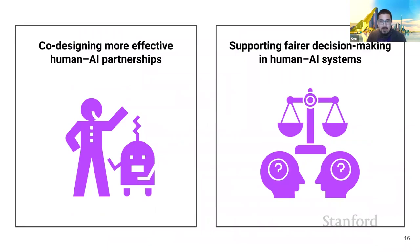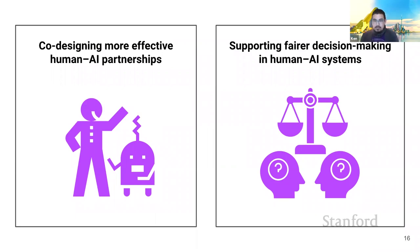In this talk, I'll share two major themes of my research. First, I've explored how to co-design more effective human-AI partnerships. And second, we've explored how to support fair decision-making within such partnerships. Today I'll share just one prior project under each of these broad themes, and I'm also excited to close this talk by sharing some ongoing research in my group.